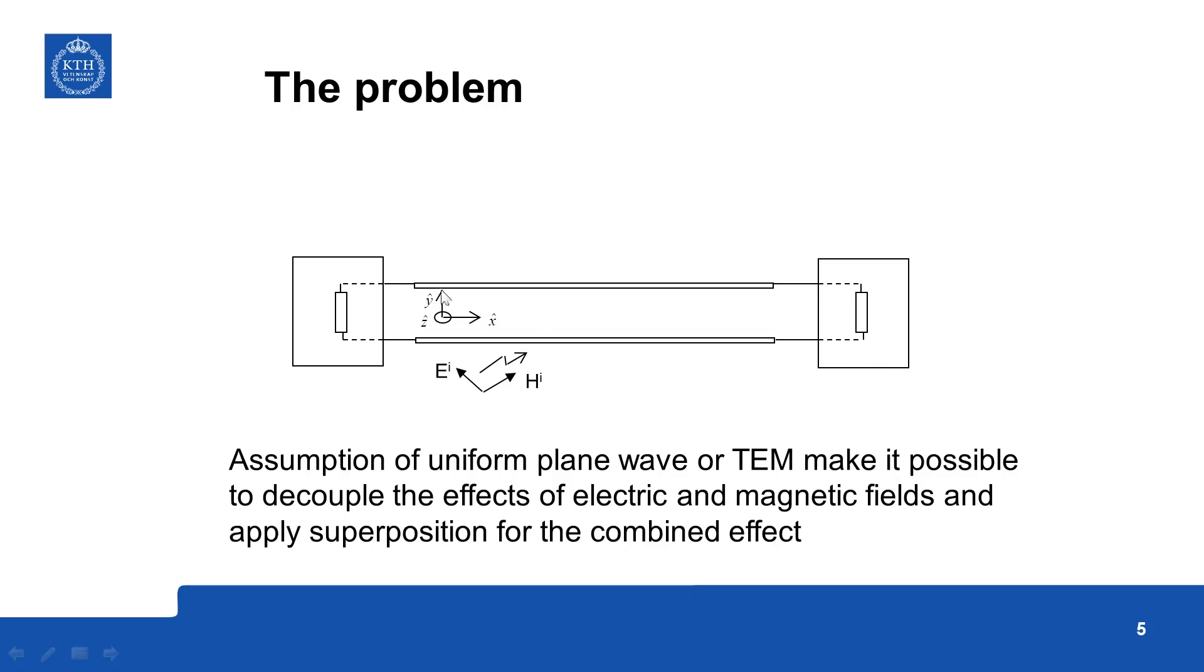Now the coordinate system is defined here, X axis, Y axis and Z coming out of the paper. So since it is TEM we can separate the effect of magnetic field and electric field, then combine those effects by applying the superposition theorem.